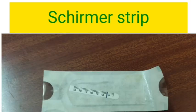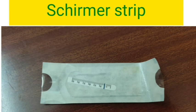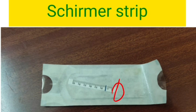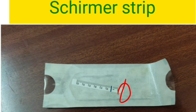The Schirmer strip — this is Whatman's No. 41 filter paper measuring 5 × 35 mm. It will be bent at one point and kept in the lower fornix at the junction of the medial two-thirds and lateral one-third, and left there for 5 minutes. After that, the wetting of the strip is measured. Values of more than 15 mm indicate normal. If it is 5 to 10 mm, it is moderate to mild keratoconjunctivitis sicca. If it is less than 5 mm, it is very severe keratoconjunctivitis sicca.